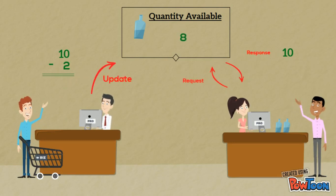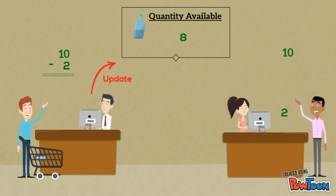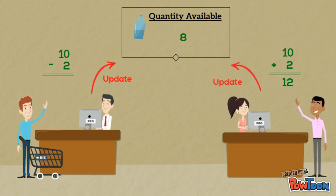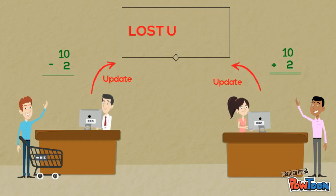The stock receiver records the receival of the two items and increases the value that he holds to 12. He then updates the value in the database. You'll notice that the cashier's update from the sale was not taken into account, and this is known as the lost update problem.